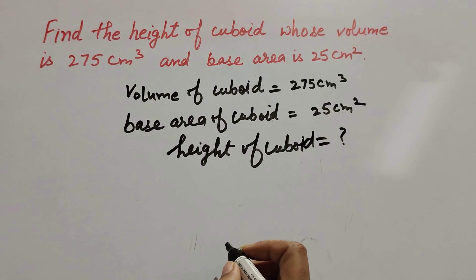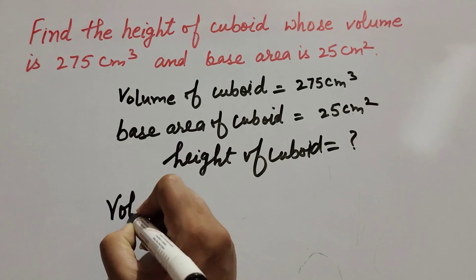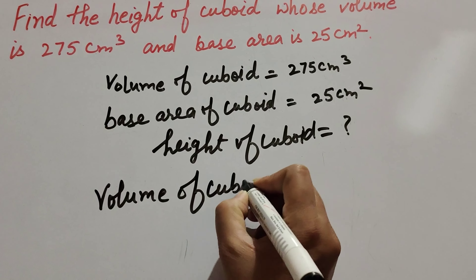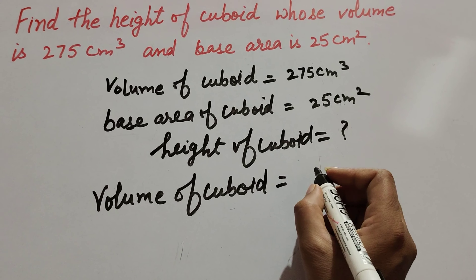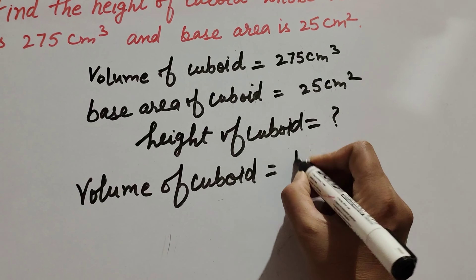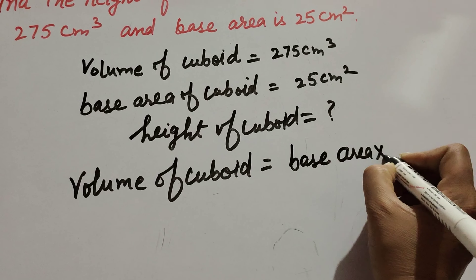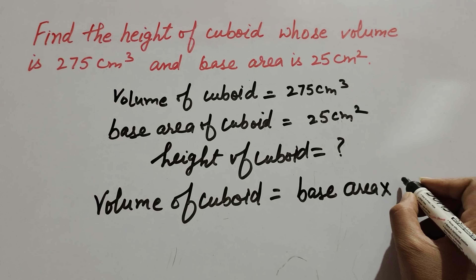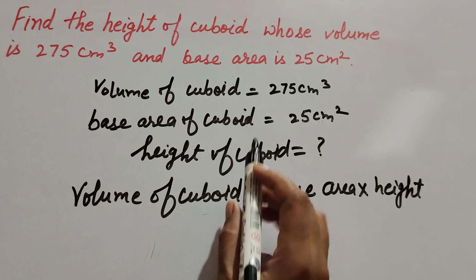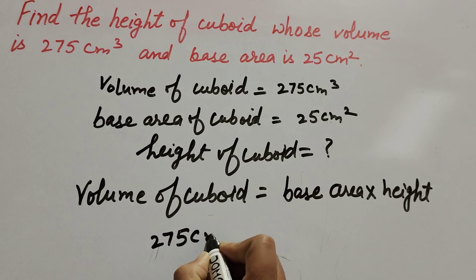We know the formula: volume of cuboid is equal to base area of cuboid multiplied by height of cuboid. So this is the formula to find the volume of cuboid. Volume of cuboid is given as 275 centimeter cube.